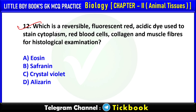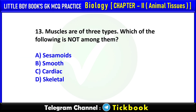Q12. Which is a reversible fluorescent red acetic dye used to stain cytoplasm, red blood cells, collagen, and muscle fibers for histological examination? Option number A: Eosin is the correct answer.